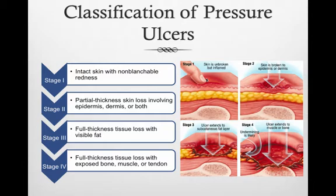Pressure ulcer stages have all been identified. For an unstageable ulcer, one where the actual depth is completely obstructed by slough or eschar. In wounds with suspected deep tissue injury, a purple or maroon localized area of discoloration or an intact blood-filled blister caused by damage to underlying soft tissue from pressure and/or shear is present.